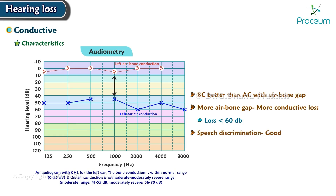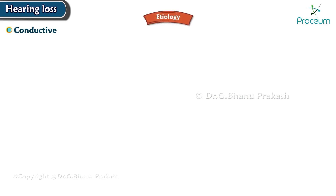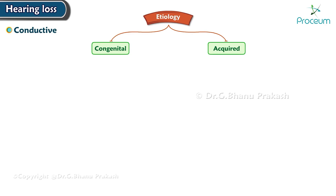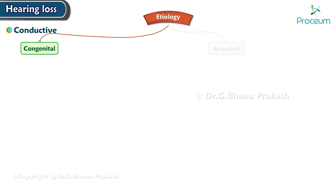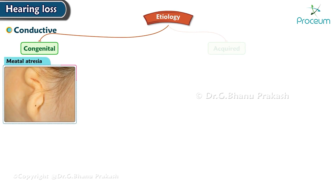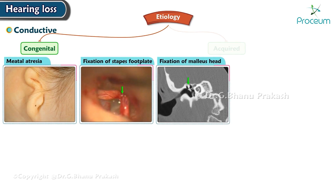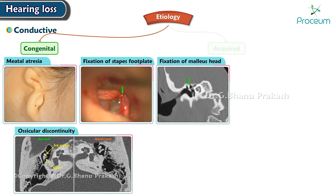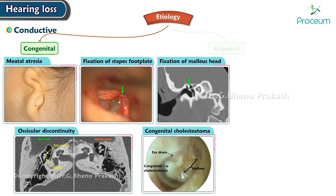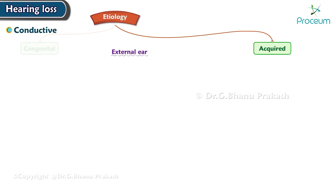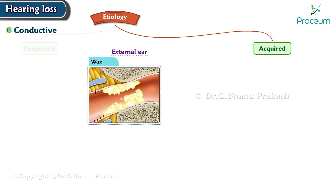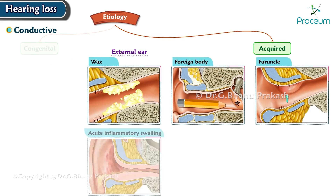The etiology of conductive hearing loss may be congenital or acquired. Congenital causes include meatal atresia, fixation of stapes footplate, fixation of malleus head, ossicular discontinuity, and congenital cholesteatoma.